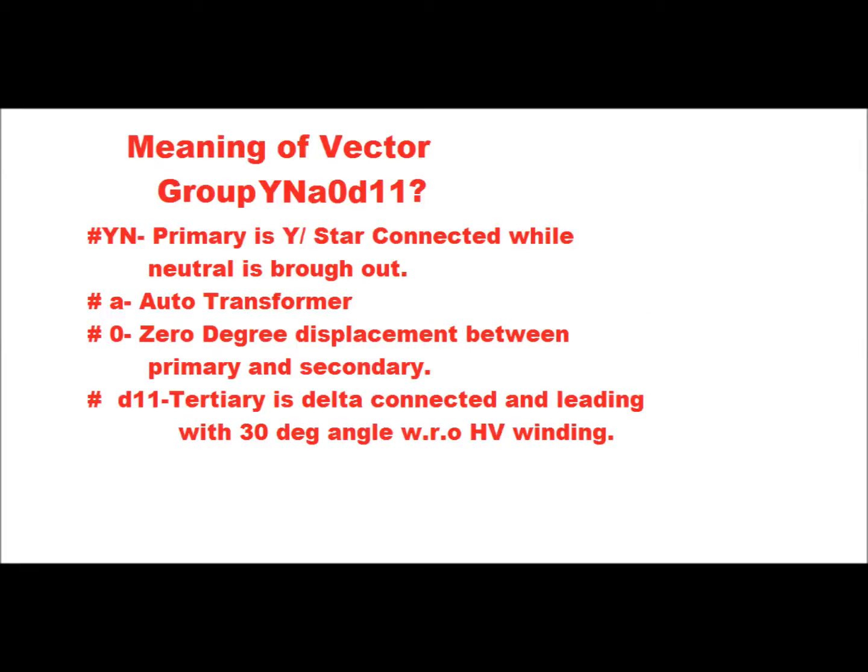What is the meaning of the vector group YNA0D11? Here capital Y and capital N stand for primary is star connected while neutral is taken out. N stands for neutral, A stands for auto transformer. Zero means that in between primary and secondary there is zero degree displacement. D11 — D in small letter denotes that tertiary is delta connected and leading with 30 degree angle with respect to HV and LV.